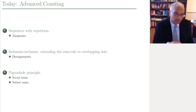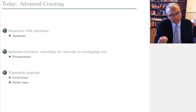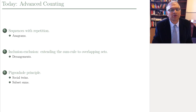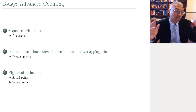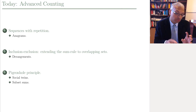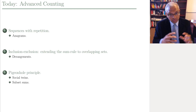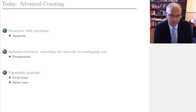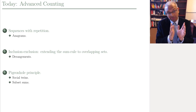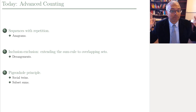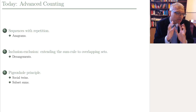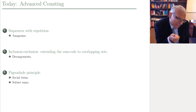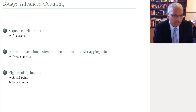Today we're going to go a little further. We'll discuss sequences and anagrams — counting sequences can get complicated when you allow repetition. We'll extend the sum rule to the principle of inclusion and exclusion, a very powerful counting technique. The sum rule only applies when you're counting the union of disjoint sets; inclusion and exclusion holds when the sets can overlap. Lastly, we'll cover the pigeonhole principle — simple but very powerful — which we will ultimately use to show that some models of computing are not that powerful.